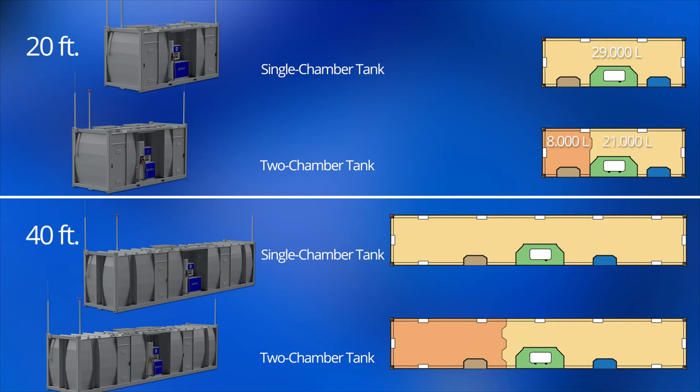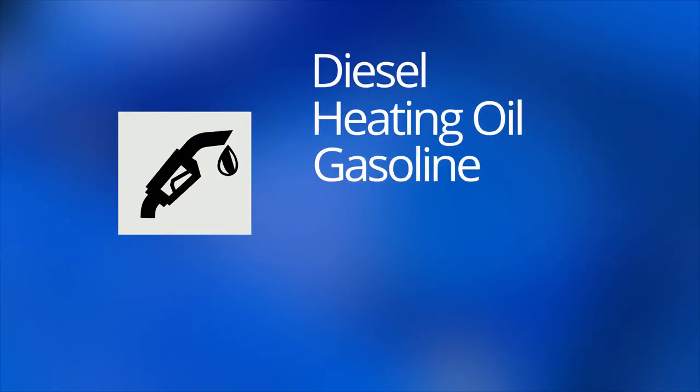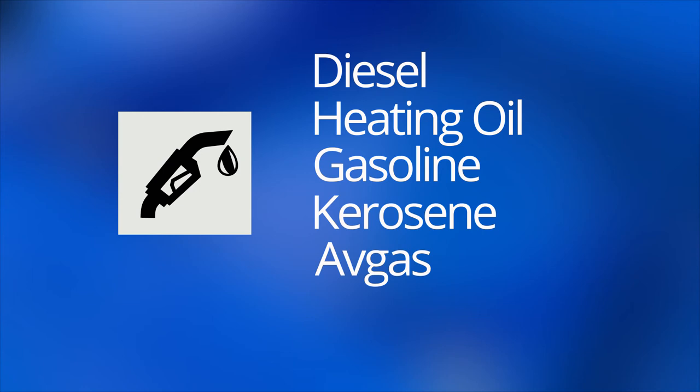With the 40-foot filling station, the single-chamber version volume is approximately 60,000 liters, and the two-chamber version 15,000 and 44,000 liters. The compact filling stations can dispense diesel, heating oil, gasoline, kerosene and avgas.